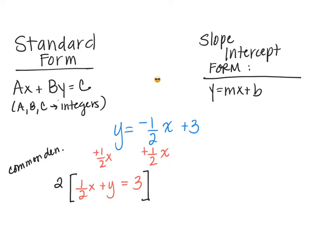But you can't just multiply one thing. You have to multiply the entire equation because it's a balance. So each term will be multiplied by 2, which will leave me with 1x plus 2y equals 6.